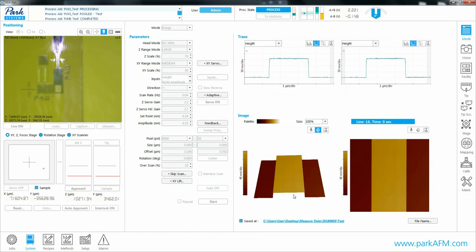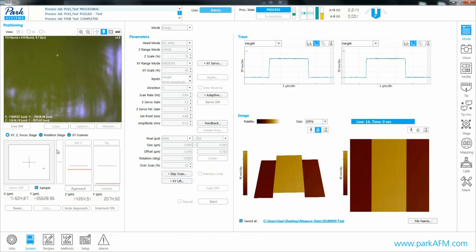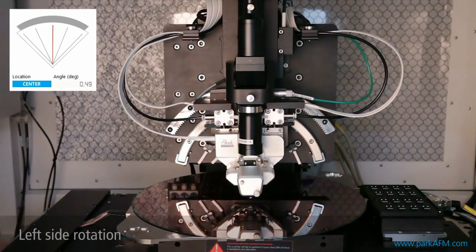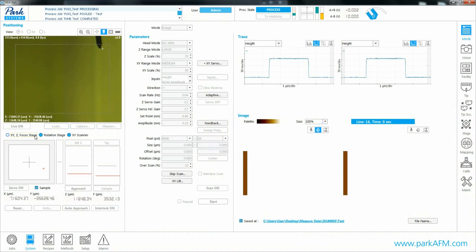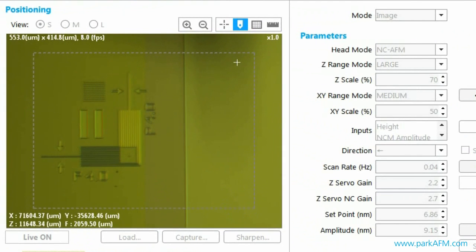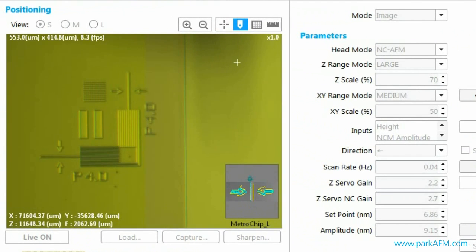PARC-NX3DM features a rotating head which turns to measure a sample's 3D structures, such as sidewalls. The head first rotates to measure the left sidewall. The area specified in the recipe is targeted and scanning begins.